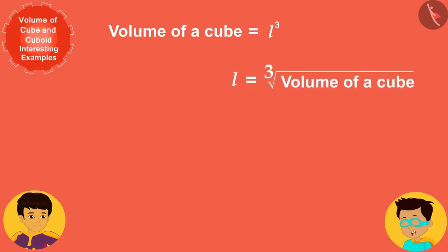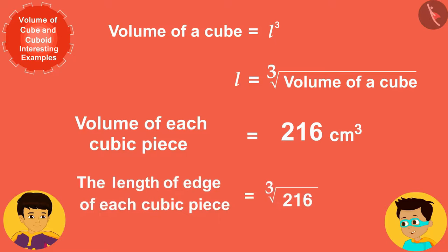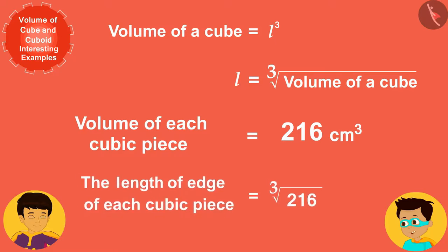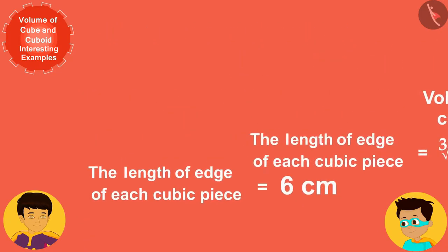the measurement of the side of a cube will be the cube root of its volume. Here the volume of each cubic piece is 216 centimeter cube. If we write this here instead of the volume of the cube in this way, we can easily find the length of the edge of each piece is six centimeters.